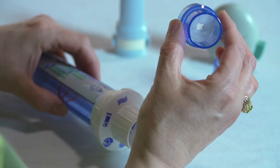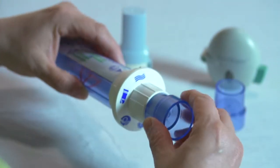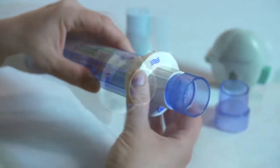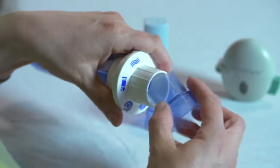For other DPIs, an adapter is needed. Adapters are available for the Aerolizer, Handihaler, and Twisthaler. The Aerolizer adapter is labeled with an F and has a larger opening, and the Handihaler adapter is labeled with an HH and has a smaller opening. The Twisthaler adapter is labeled with a THX.